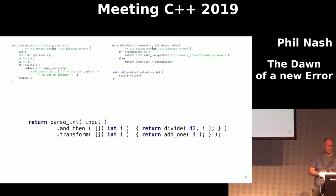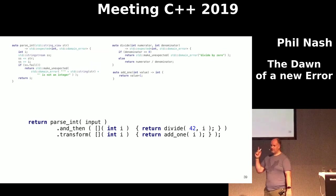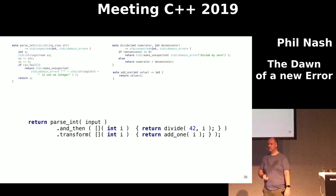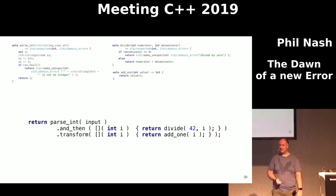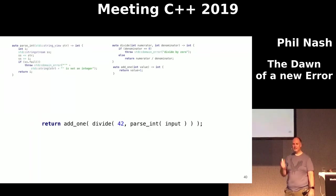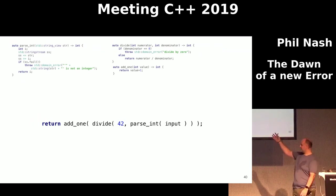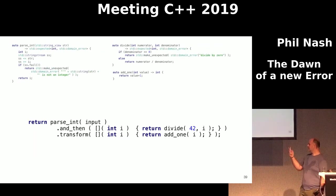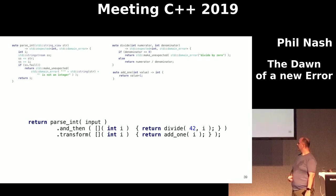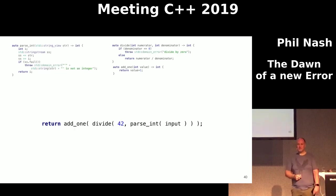But we have another form of error handling in C++ today: exceptions. The same example with exceptions looks much simpler. This is why it's a problem — instead of doing all that, we can do this, and there's still a massive difference.